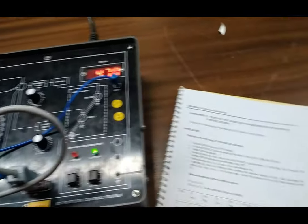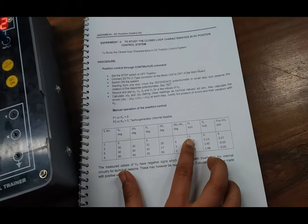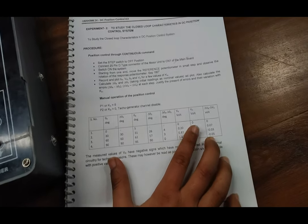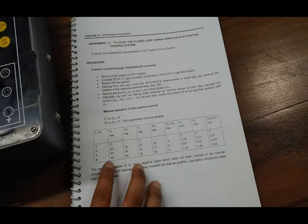For VR, we follow the same process as theta r and theta 0: final minus initial. We take theta r equals 30 degrees.